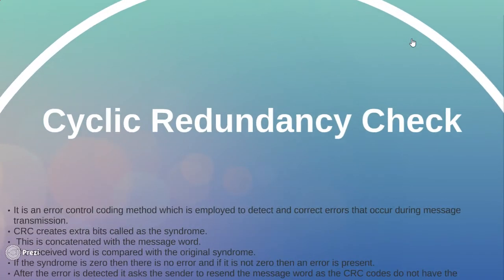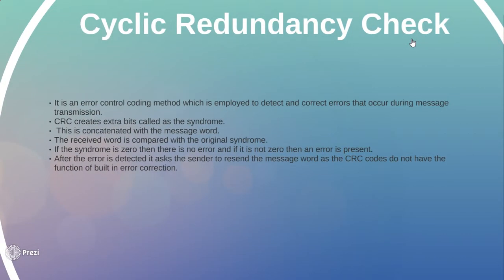Now the CRC or the cyclic redundancy check. It is an error controlling method which is employed to detect and correct errors during message transmission. They create extra bits called syndromes as in the case of Golay codes. They are concatenated with the message word and similar to the Golay codes, if the syndrome is zero then there is no error and if it is not zero then that indicates that there is an error present in it.